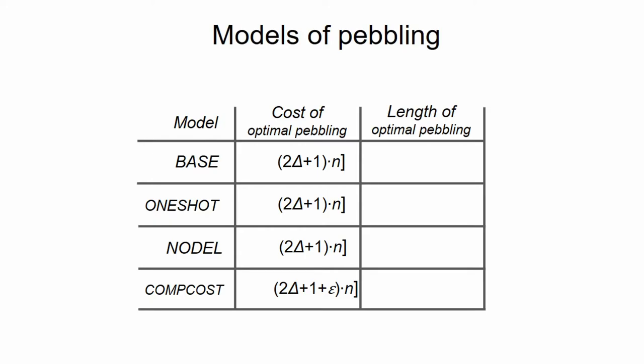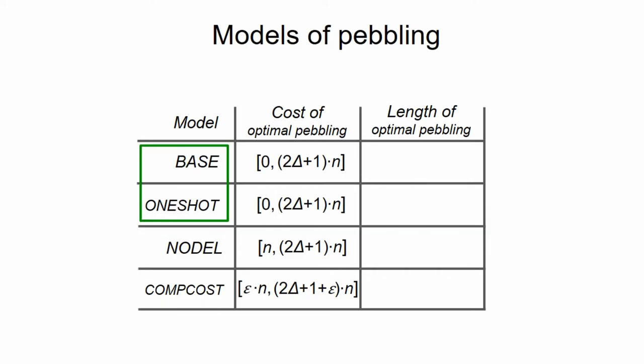And as for a lower bound, in the upper two models, it can very well happen that the cost of a pebbling is actually as low as 0, but we do have some lower bounds in the other two models. In nodal, since we cannot delete any pebble, the final state will have a pebble on each node, and unless we have a very high number of red pebbles, this will mean that we essentially have to transfer all values to slow memory by the end. And in comCost, since each node has to be computed, we also have a lower bound of epsilon times n. And in practice, delta is usually small or even a constant, so in these lower two models these bounds are within a constant factor from each other, whereas in the upper two models the upper and lower bounds can differ by a linear factor, so these two models are somewhat more interesting from a theoretical perspective.